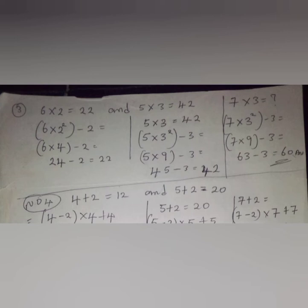Let's look at the solution. For 6 times 2 equals 22: the last number is 2, so we raise it to the power of 2, then subtract that same last number. It becomes 6 times (2² − 2) = 6 times (4 − 2) = 6 times 2 = ... wait — 6 times 4 = 24, minus 2 = 22. Exactly what's given. Next: 5 times 3 equals 42.